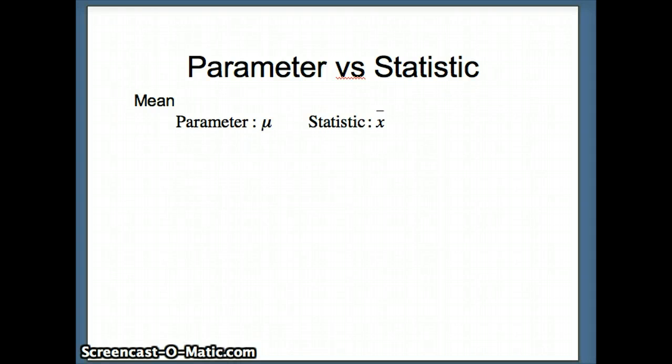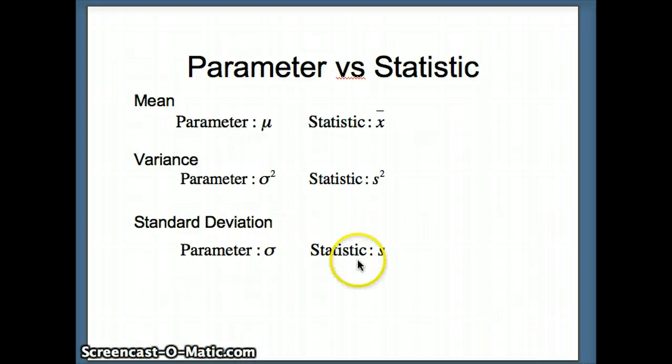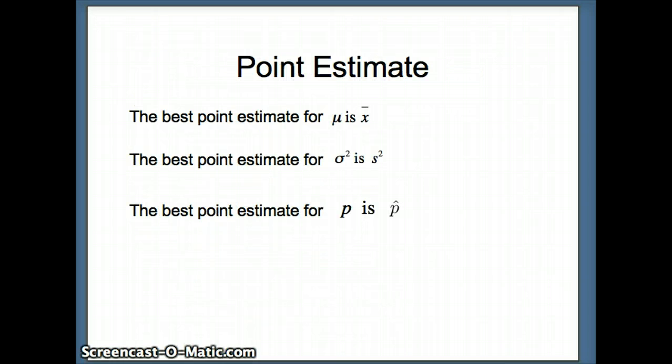Let's take a look at some parameters and some statistics. If we're looking at the mean, the parameter symbol that we use is μ and the symbol for the statistic is x̄. For the variance we use the symbol σ² for the parameter and s² for the statistic. And if we go to standard deviation, of course we know the standard deviation is simply the square root of the variance, so we use the symbol σ for the parameter and s for the statistic. You'll notice in these first cases we use a Greek letter for a parameter and a standard letter for the statistic. But that's going to change with our proportion. We use the letter P to represent the parameter and we use the symbol P̂, P with a little caret on top, to represent a statistic.